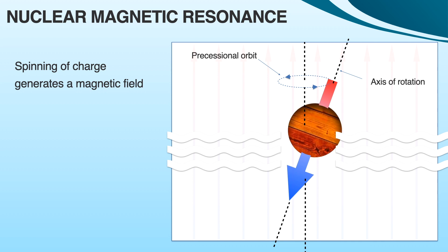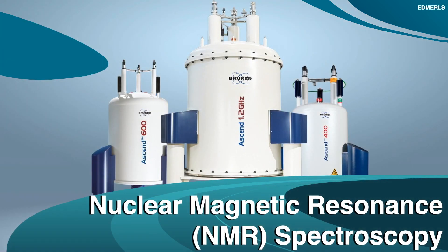That was all about the theory of NMR spectroscopy. In the next video, we will try to derive the mathematical expression for the frequency of precession and energy of radiation absorbed. If you like this video, please click on the like button and also subscribe to my channel for upcoming videos. Thank you.